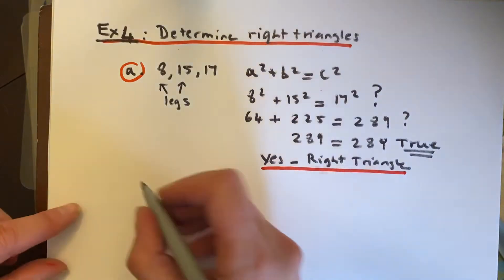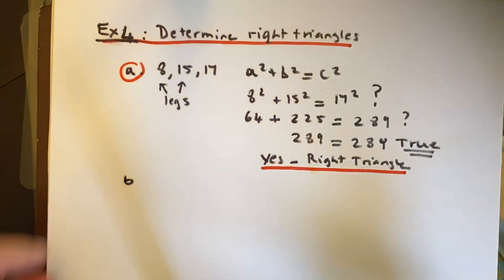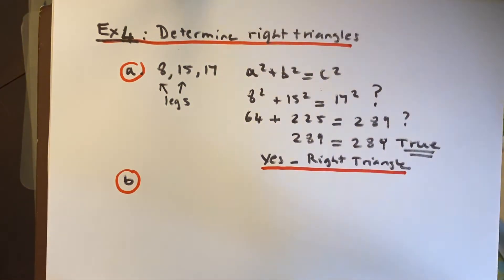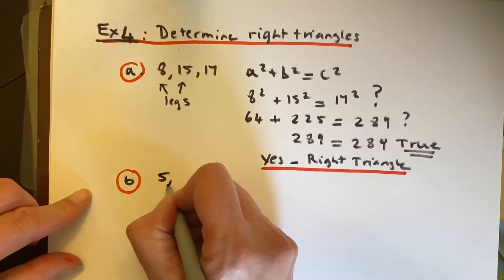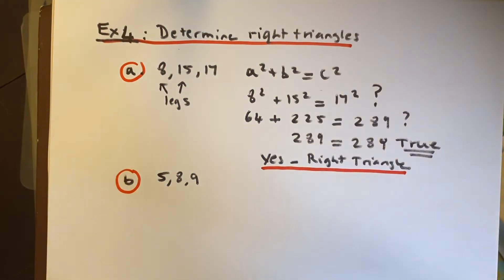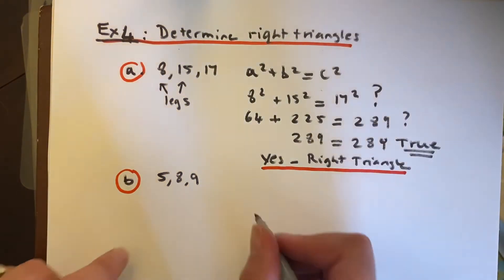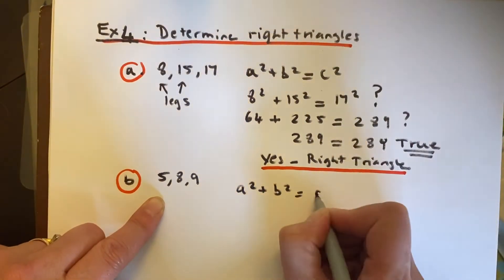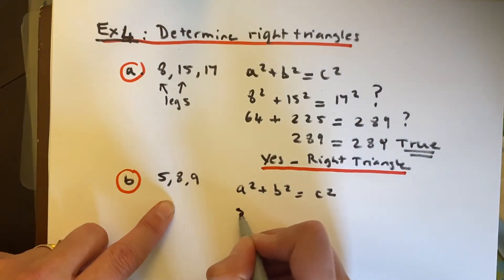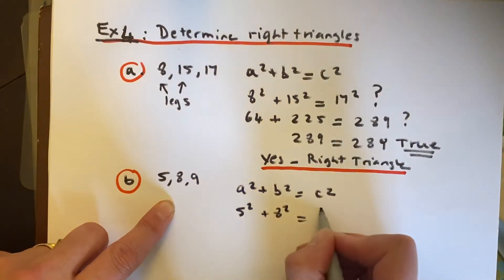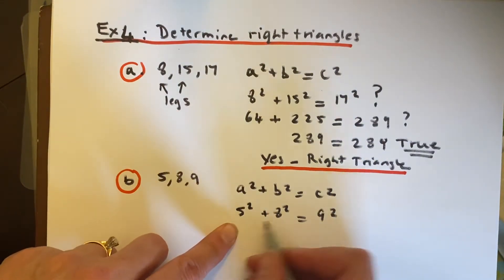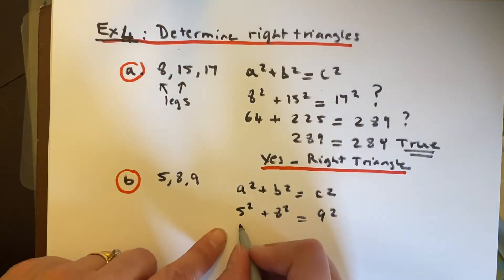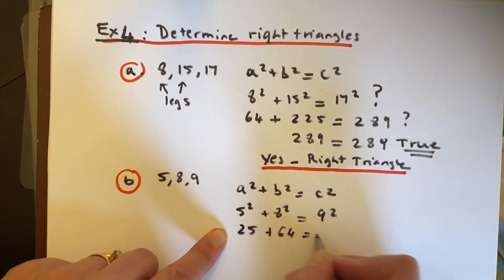Let's do part B. Part B is going to give us three more lengths. Are the lengths 5, 8, 9? Do they constitute a right triangle? Just as I did up here, I have a squared plus b squared equals c squared. And I'm going to put in 5 squared plus 8 squared equals 9 squared because these are the smaller lengths. And if this is indeed a right triangle, the 9 is going to be my hypotenuse. So I get 25 plus 64 equals 81. Is that a true statement?